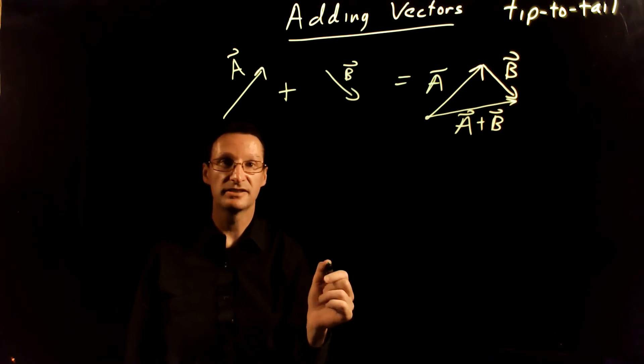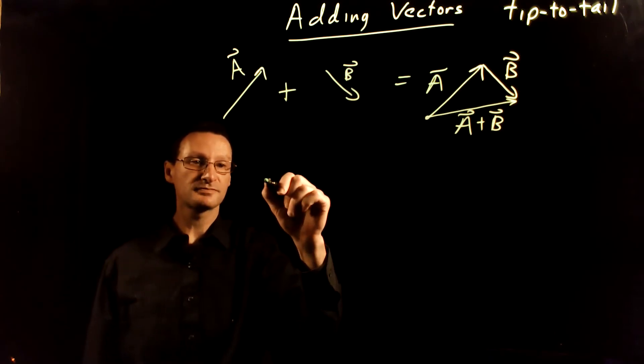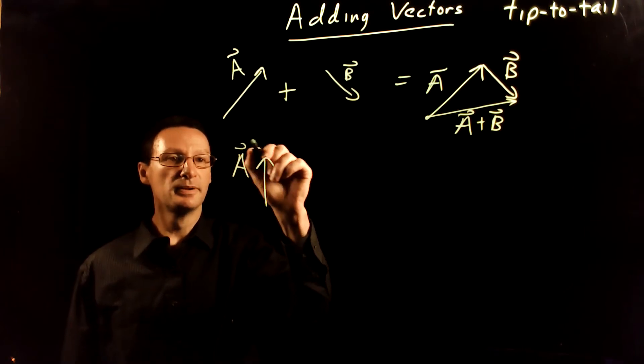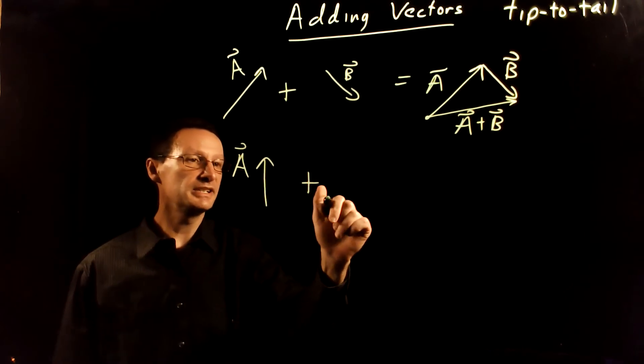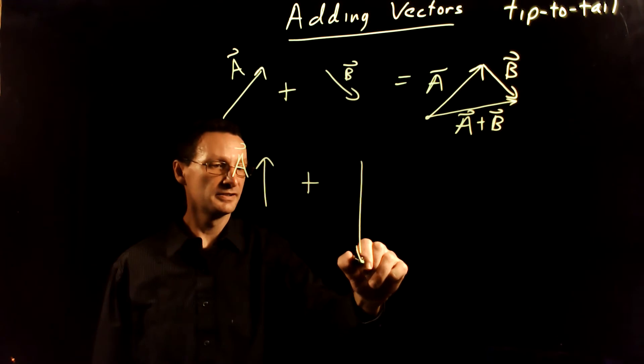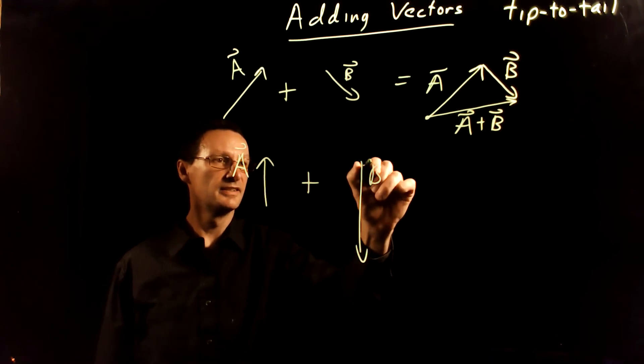So that's how you do that. Let's do another quick example here. Imagine A points straight up and B points straight down like that. How do you do those?